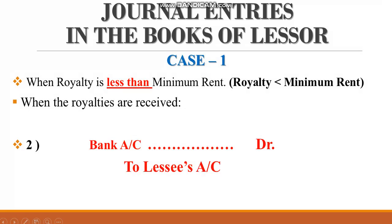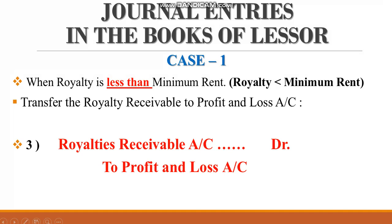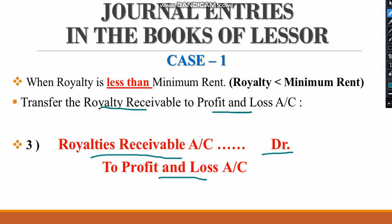The second entry is: bank account debit to lessee's account. The third entry is: royalty receivable account debit to profit and loss account. You have to transfer the royalty to the profit and loss account, so the entry will be royalty receivable account debit to profit and loss account. These are the three entries in case number one.